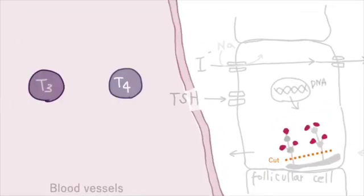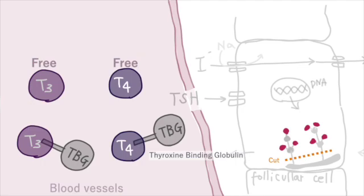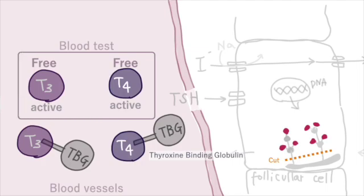Thyroid hormones released into the blood bind to thyroxine-binding globulin or albumin. Some of them remain unbound, free form. Only the unbound, free form is active. So when evaluating thyroid function, always measure free T3 and free T4 in blood tests.